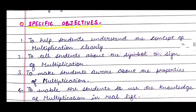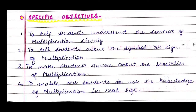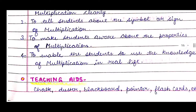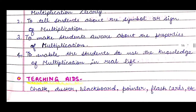Then we will come to our Specific Objectives, which will be related to our topic. First: to help students understand the concept of multiplication clearly. Second: to tell students about the symbol or sign of multiplication. Third: to make students aware of the properties of multiplication. Fourth: to enable students to use the knowledge of multiplication in real life. Then we will write our teaching aids — chalk, duster, blackboard, pointer, flashcards, chart, etc.